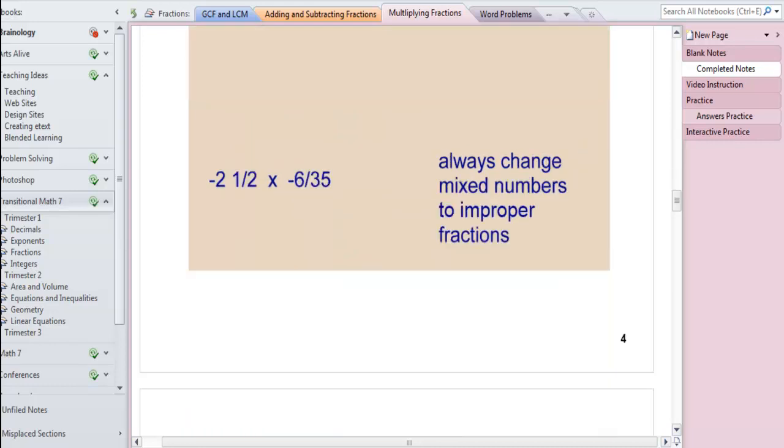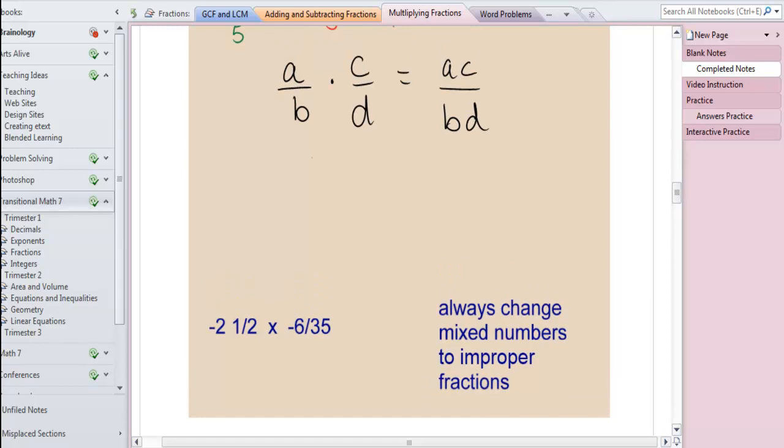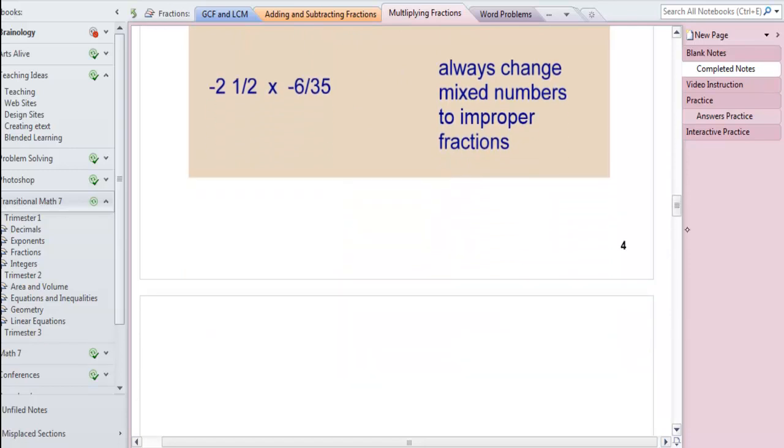When you have mixed numbers, you need to change mixed numbers into improper fractions because you're multiplying numerator times numerator and denominator times denominator. You can't do that if you don't know what your numerators and denominators are, and it's very unclear what numerator you have with a mixed number. You have to change it to an improper fraction. So for negative 2 and a half, that's going to be 2 times 2 plus 1. So that gives us negative 5 halves times negative 6 over 35.